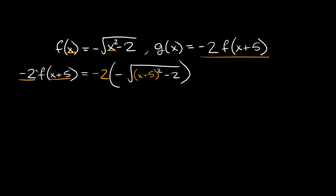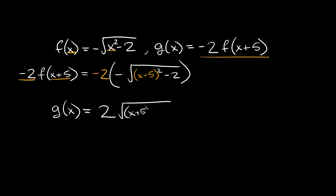Remember this whole thing is just equal to g of x. We distribute inside the parentheses — negative two times the negative symbol is just positive two. You don't multiply inside the radical, so we bring it straight down. So g of x is equal to two times the square root of x plus five squared minus two. There's nothing left to combine, so this is our simplified answer.